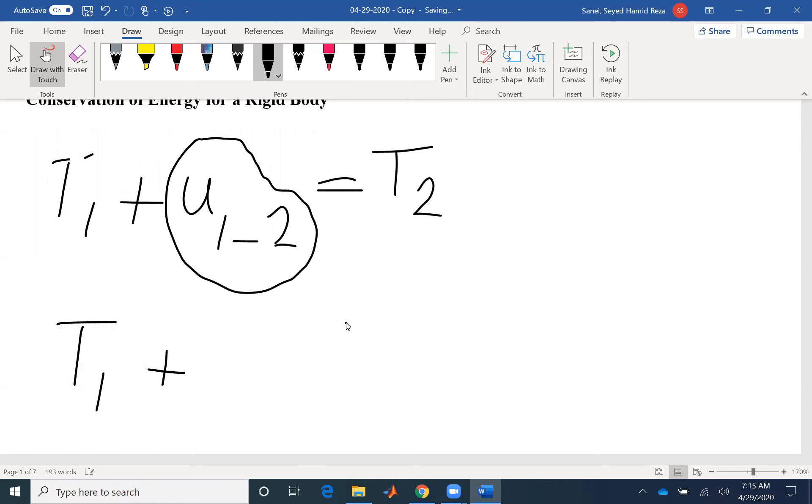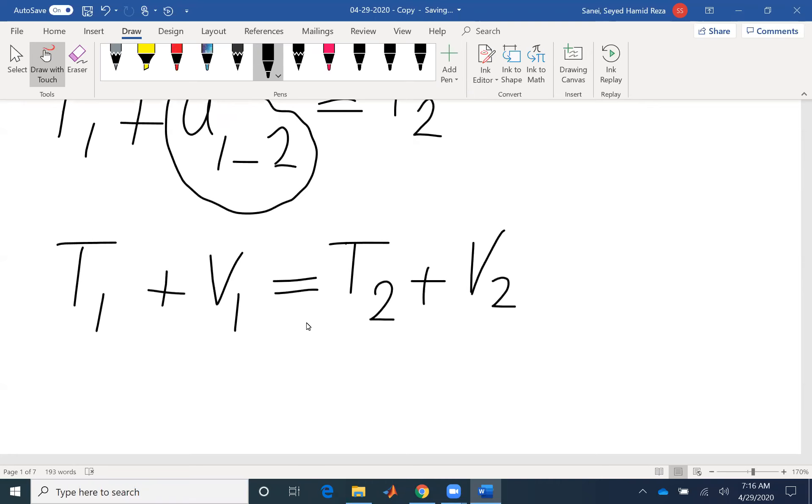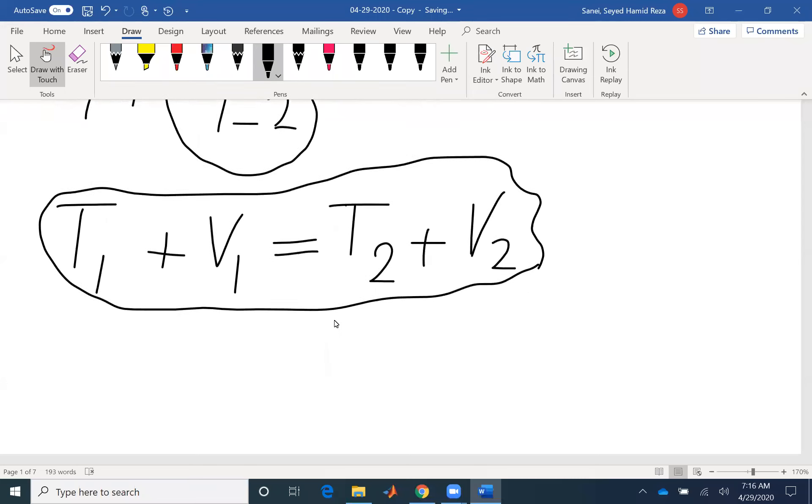Kinetic energy plus potential energy equals kinetic energy of the final instant plus the potential energy. So conservation of energy for a rigid body is the same as conservation of energy for a particle. Everything is the same here.